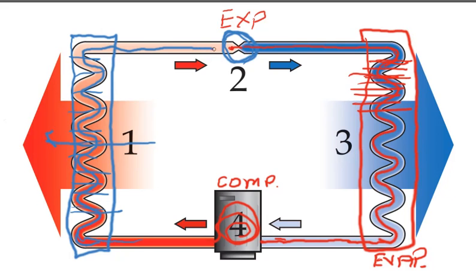Then it travels through the copper tube back to the expansion device and starts the cycle all over again.